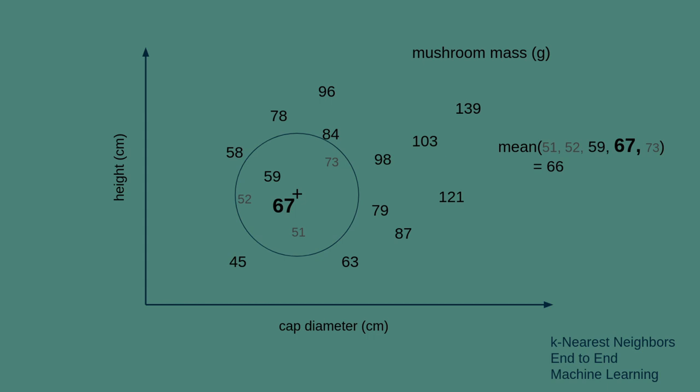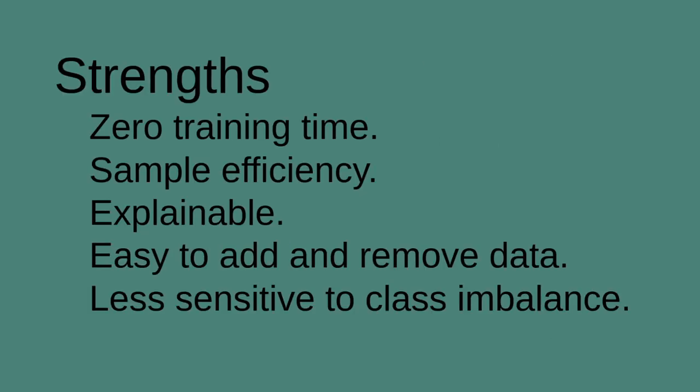So k-nearest neighbors, in my opinion, is highly underrated. They have zero training time. They're lazy, which means there's no model to train. All the calculation they do is when you ask it to do inference. When you ask it what the category or the value of a new data point is. So that means there is no training time at all. Compare that to the hours or weeks or even computer centuries used to train other models, deep neural network models, for instance. Another great thing about k-nearest neighbors is sample efficiency, meaning that you don't have to collect very many data points before you're able to start making good, useful inferences about your space that you're working in.